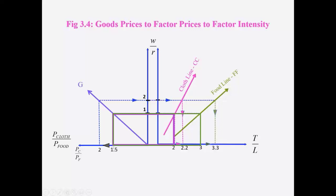Alright, so what happens when there's a change in relative price of cloth? Well, if the relative price of cloth increases, then given this GG function, we know that the wage by rental ratio would increase.